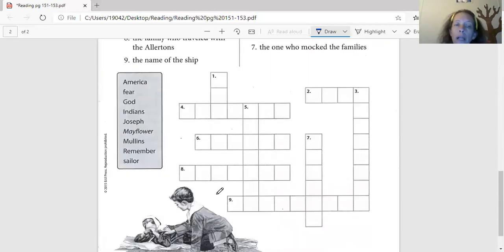All right. Our words in our word box are right up here. We've got a lot of words in our word box. Austin, can you read these words for me? The words in our word box are America, Dear God, Indian, Joseph, Mayflower, Mullins, Salem. Very good.